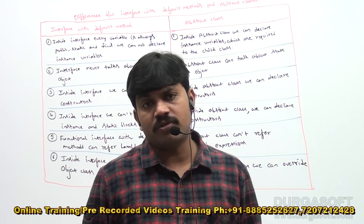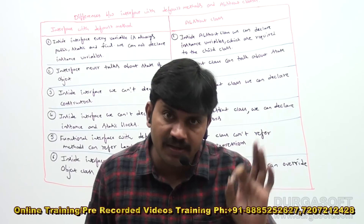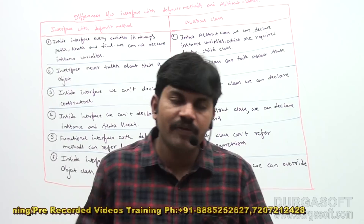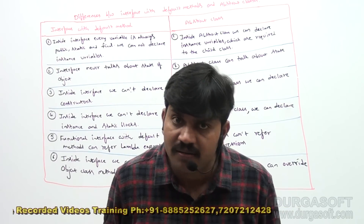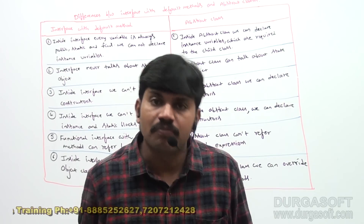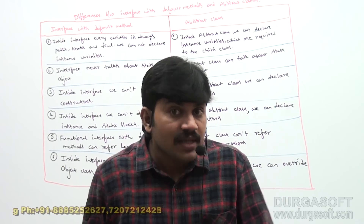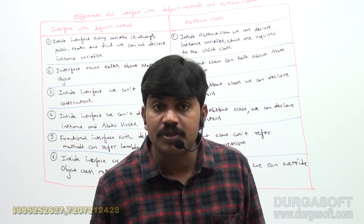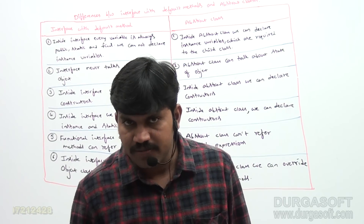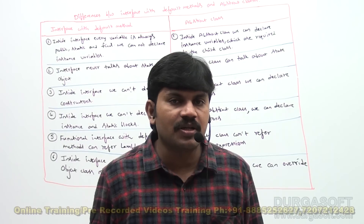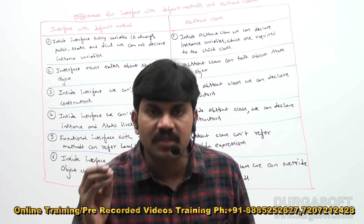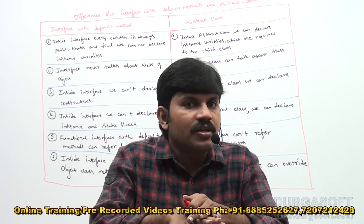For example: inside an interface, every variable is always `public static final` — you can never declare instance variables inside an interface. But inside an abstract class, you can declare instance variables required by child classes. Next, inside an interface you can't declare a constructor, but an abstract class can contain a constructor. Next, an interface never talks about the state of an object, whereas an abstract class can. Also, a functional interface with a default method can refer to lambda expressions, but an abstract class cannot.